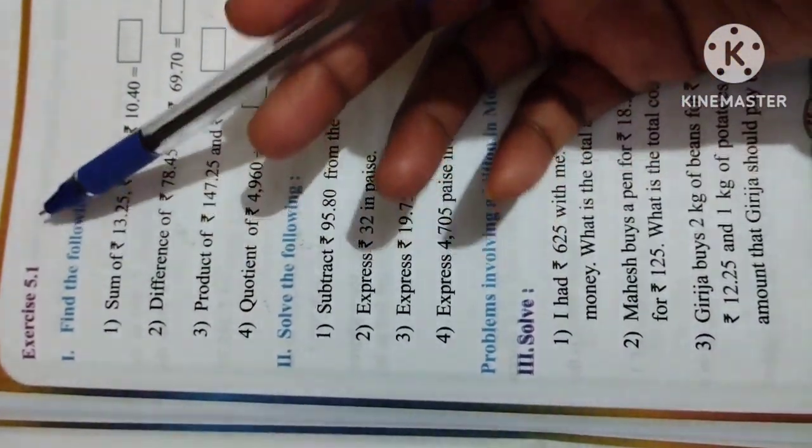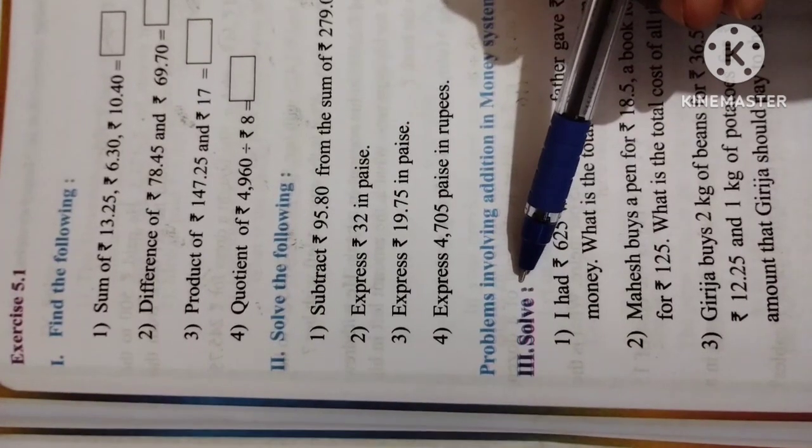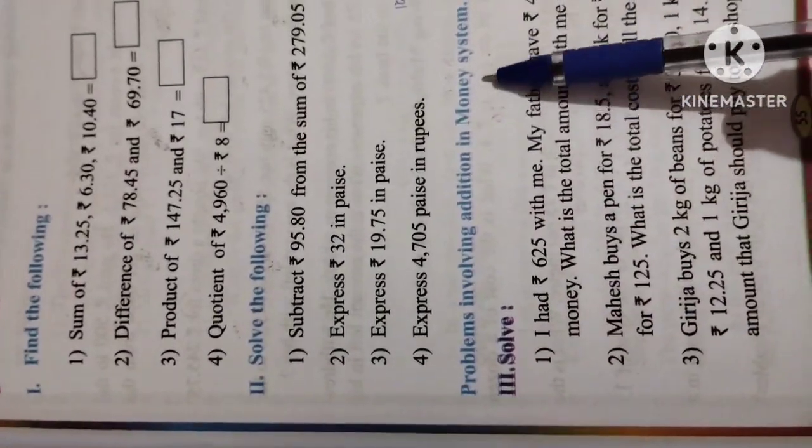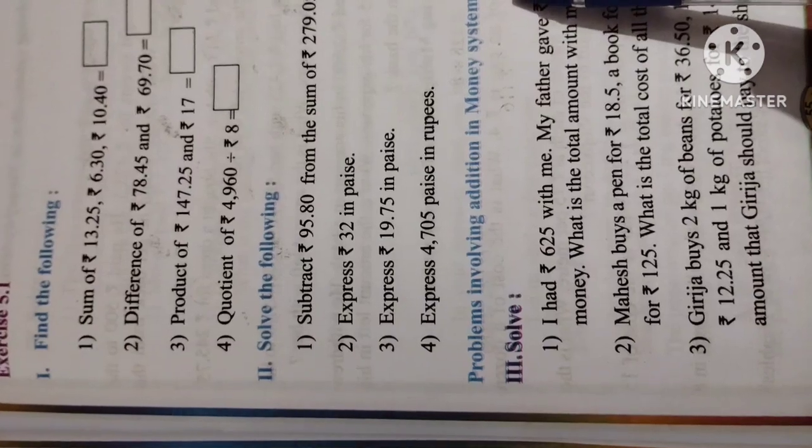Exercise 5.1, we have now Third Main. That is, Addition with Money System.